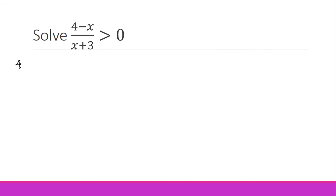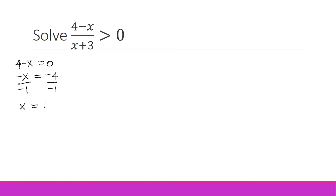We have here 4 minus x on the numerator, so we equate that to zero: 4 minus x equals zero. Solving for x, we transfer 4 to the other side, leaving negative x equals negative 4. We eliminate the negative by dividing both sides by negative 1, so x equals positive 4. That is our value from the numerator.